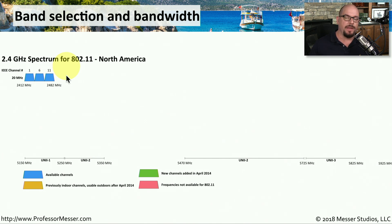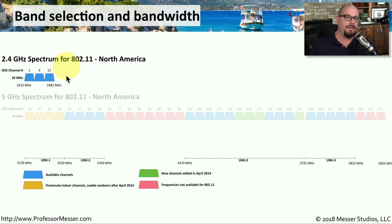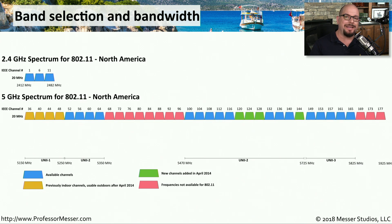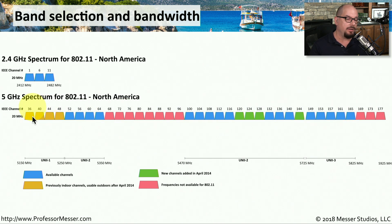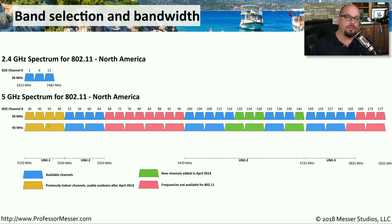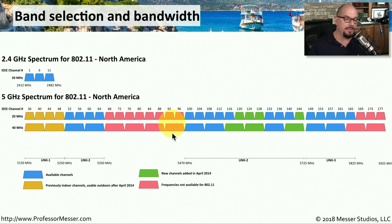Now let's look at how much bandwidth is available at the 5 gigahertz range. You can see it's a significant difference compared to running at 2.4 gigahertz. Remember that anything colored red is unavailable, but all of the other colors are available as 20 megahertz channels in the 802.11 5 gigahertz range. We mentioned that 802.11n could use 40 megahertz ranges, and you can see those ranges are broken out — anything that's red is unavailable.